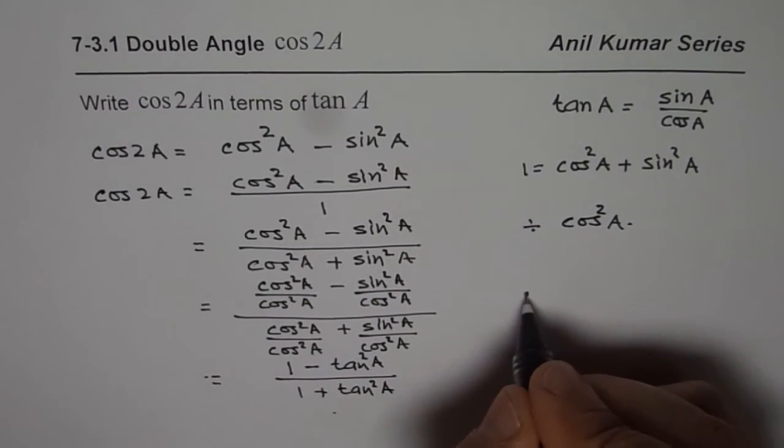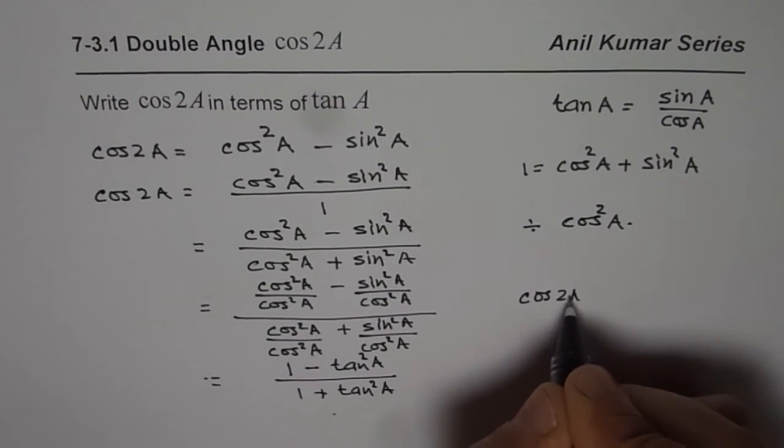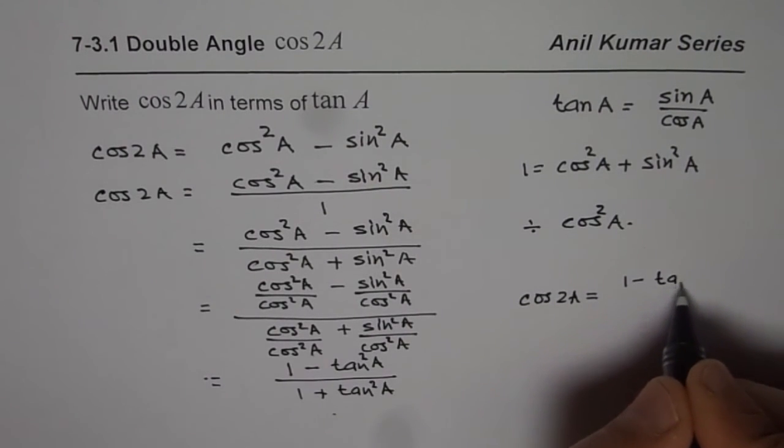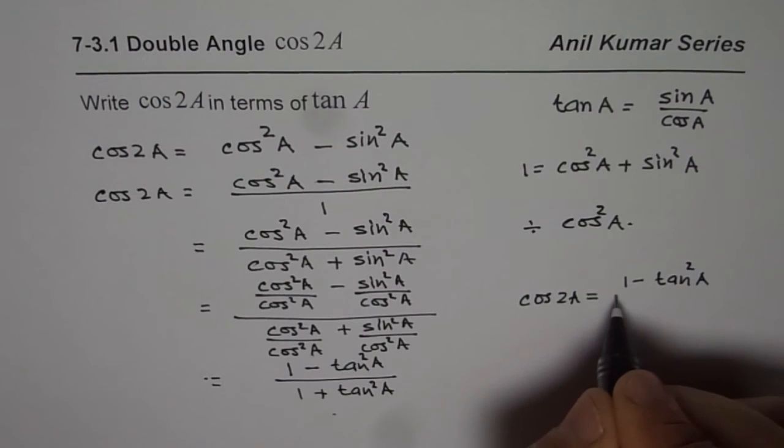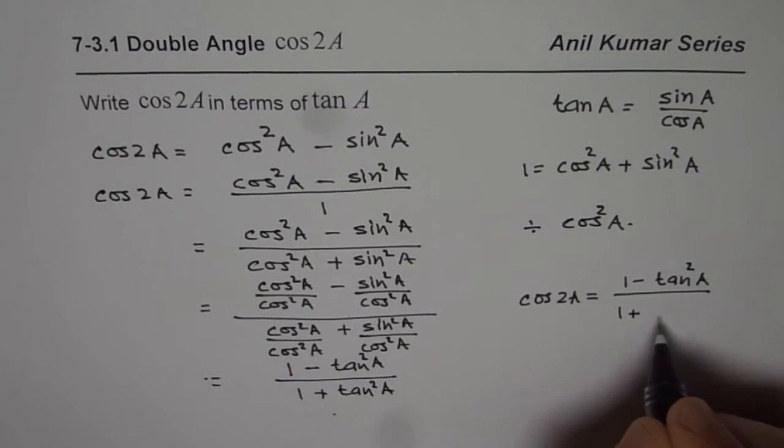So we can write cos 2A equals 1 minus tan²A divided by 1 plus tan²A. Now this is a very important formula and normally this question is seen in test papers.